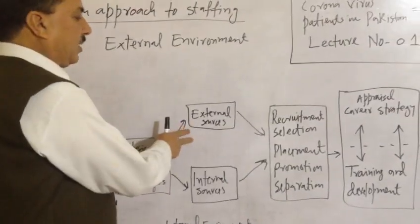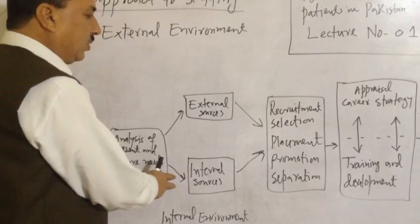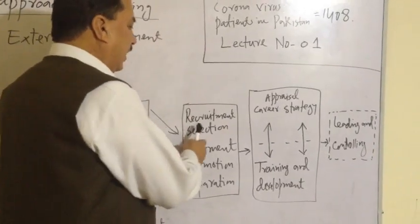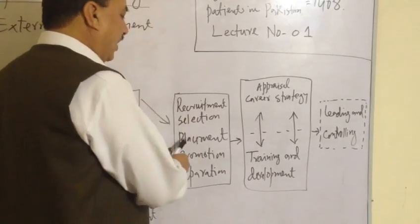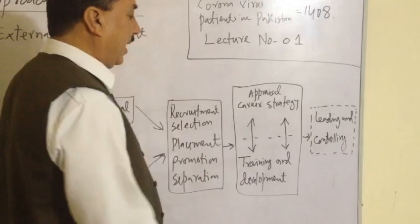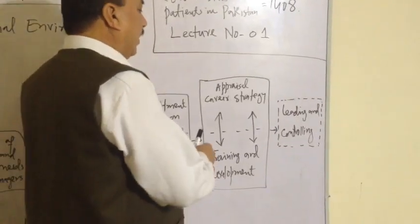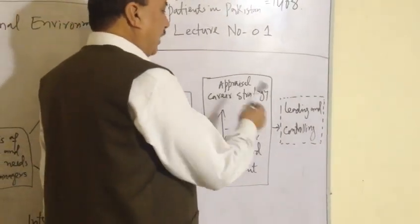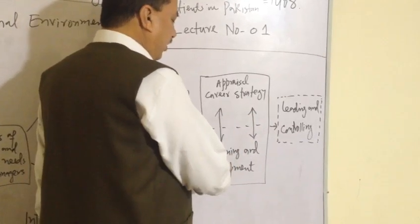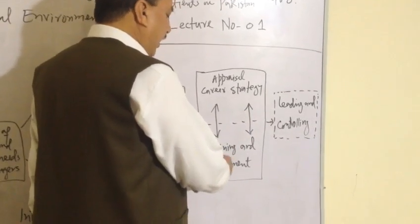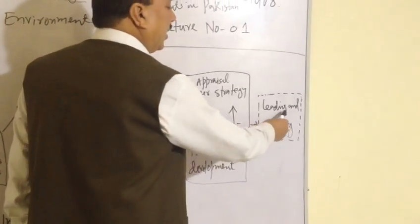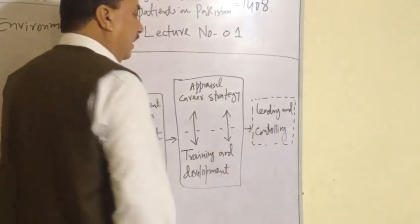Then you can see two different things: external sources and internal sources. And after that you can see many things like recruitment of staff, selection of staff, placement of staff, promotion of staff, and separation of staff. And lastly you can see the appraisal career strategy, the appraisal report, and the different trainings and development programs for the staff. And the last thing you can see in the dotted lines — that is the leading and controlling.